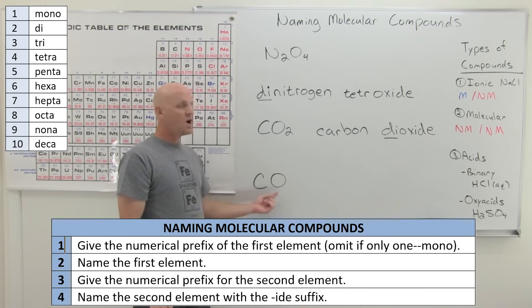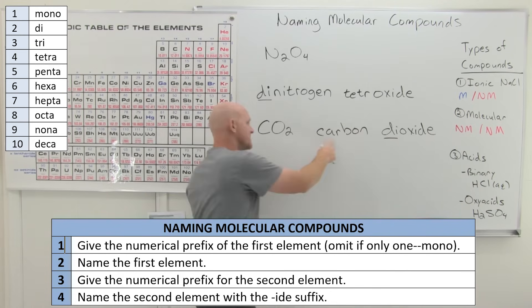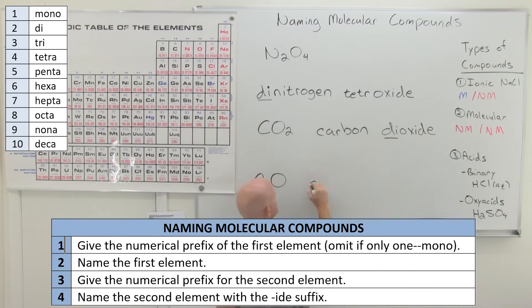Now, it turns out we've got CO here. We're going to do the same thing again for carbon. We're not going to say monocarbon. We're just going to say carbon, but if you've got one of the second element, odds are you're probably still going to have to include mono here. And we are here.